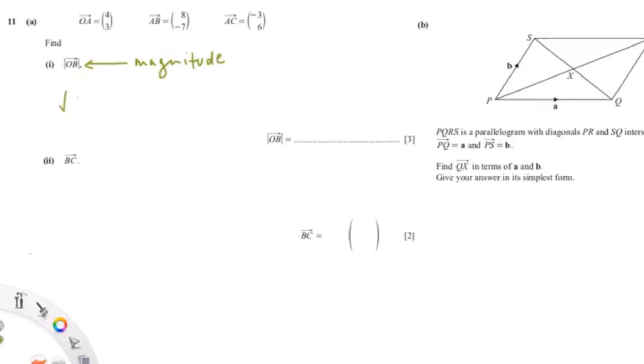So we know that the formula to find magnitude equals to the square root of x squared plus y squared.